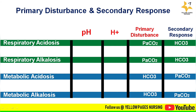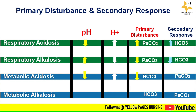In summary table form: respiratory acidosis has decreased pH, increased PaCO2 as primary disturbance, and increased bicarbonate as secondary response. Respiratory alkalosis has increased pH, decreased PaCO2 as primary disturbance, and decreased bicarbonate as secondary response. Metabolic acidosis has decreased pH, decreased bicarbonate as primary disturbance, and decreased PaCO2 as secondary response. Metabolic alkalosis has increased pH, increased bicarbonate as primary disturbance, and increased PaCO2 as secondary response.